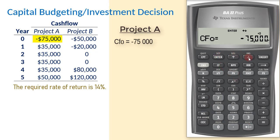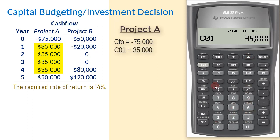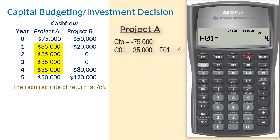Scroll down. C01 will be $35,000, enter, and scroll down. F01 is the frequency, or the number of times we have that cash flow consecutively. It is automatically set to 1 when you enter a cash flow. Since we have $35,000 four times, we input 4, enter, and scroll down.